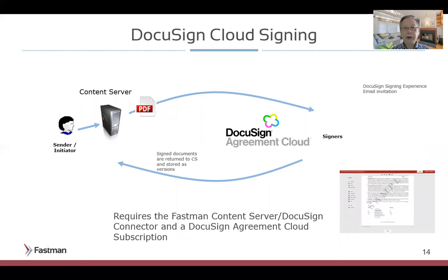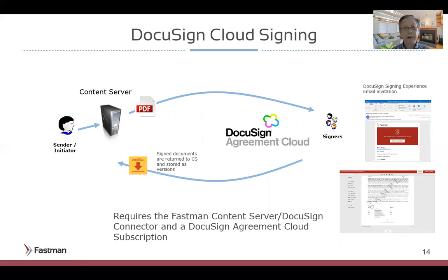A further illustration of the DocuSign Agreement Cloud shows an e-signature solution in action. Note how the initiation from the sender occurs within your Extended ECM environment and the document is sent to the DocuSign cloud. Signers will participate through the DocuSign workflow, which includes email notification. Signed documents and completed transactions are returned to the Extended Content Server and saved to the versioned documents. This can be a very fast deployment.